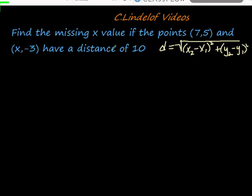Find the missing value x if the points (7,5) and (x,-3) have a distance of 10. So all I'm gonna do is take what I know. Here's the distance formula and we know that the distance is 10, so I'm just gonna be like alright, I got this 10 equals the square root.